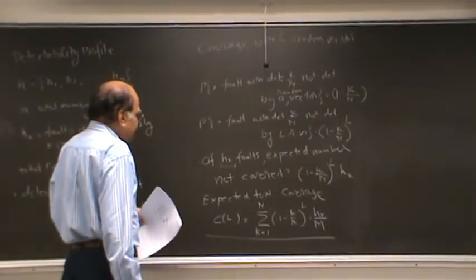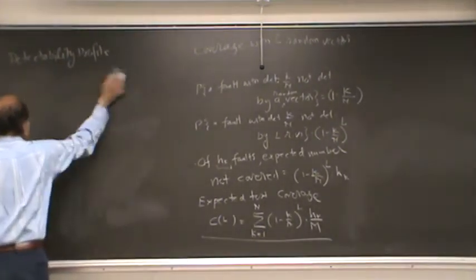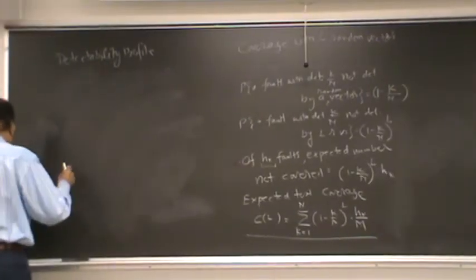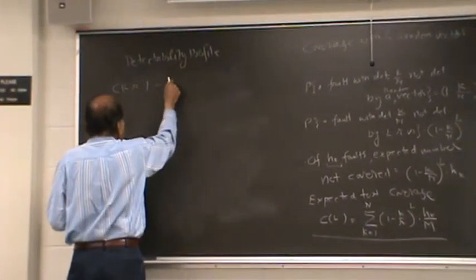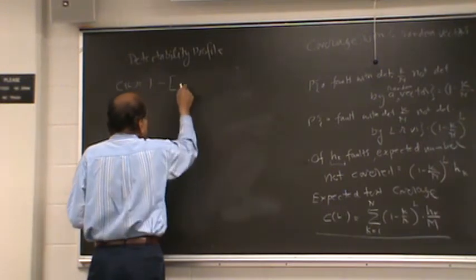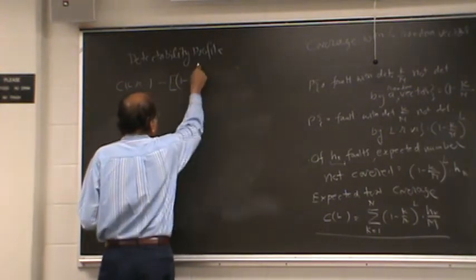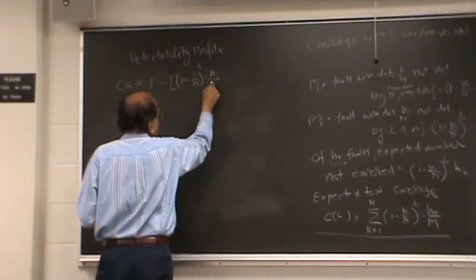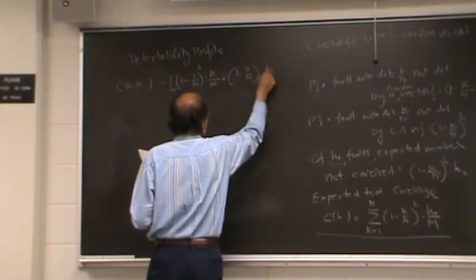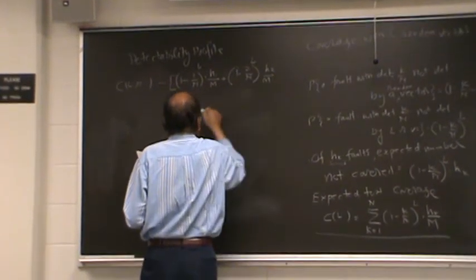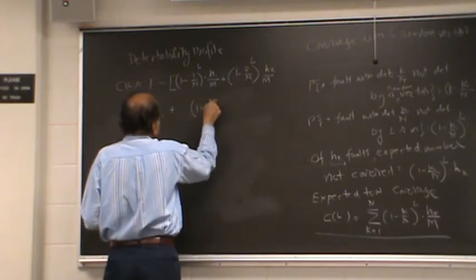And just to see what that means, let me expand that and let's look at some of the terms there. So basically we are saying that c(l) is equal to 1 minus, so here are, let me show you two, three terms there. 1 minus 1 by n, let's assume that lowest value of k is 1, with a detectability profile, h_1 by m, plus the second term would be 1 minus 2 by n, multiplied by h_2 by m, raised to l, plus,